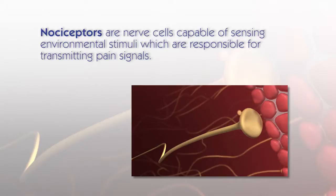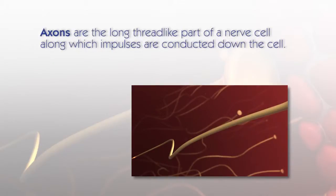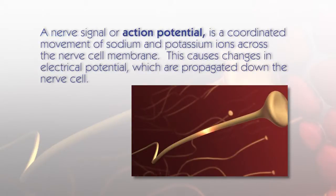Nociceptors are nerve cells capable of sensing environmental stimuli, which are responsible for transmitting pain signals. Axons are the long, thread-like part of a nerve cell along which impulses are conducted. A nerve signal, or action potential, is a coordinated movement of sodium and potassium ions across the nerve cell membrane, causing changes in electrical potential which are propagated down the nerve cell.